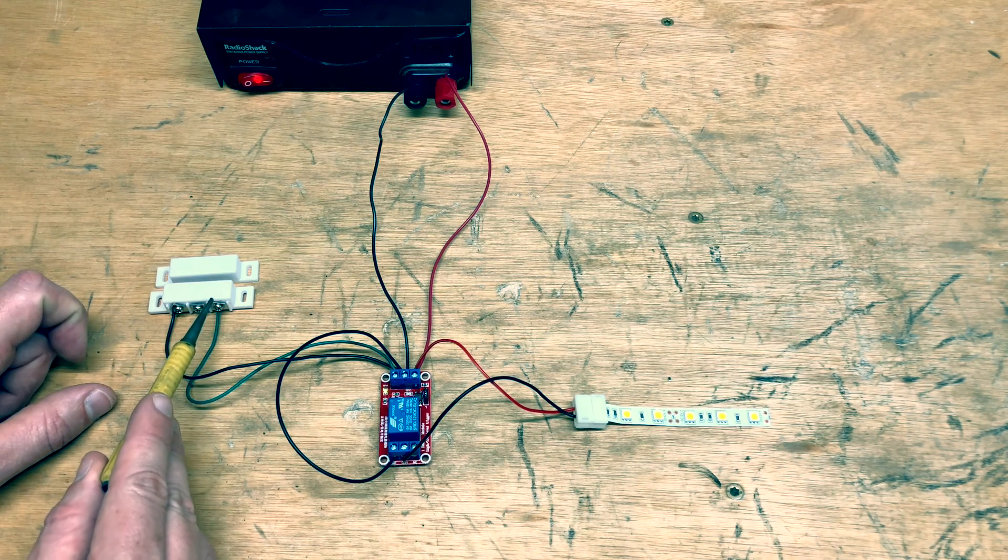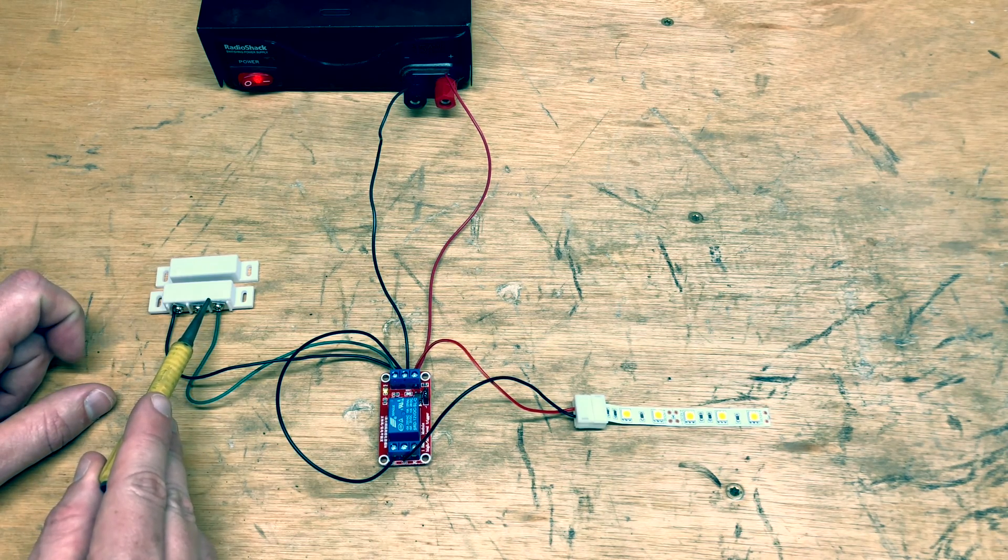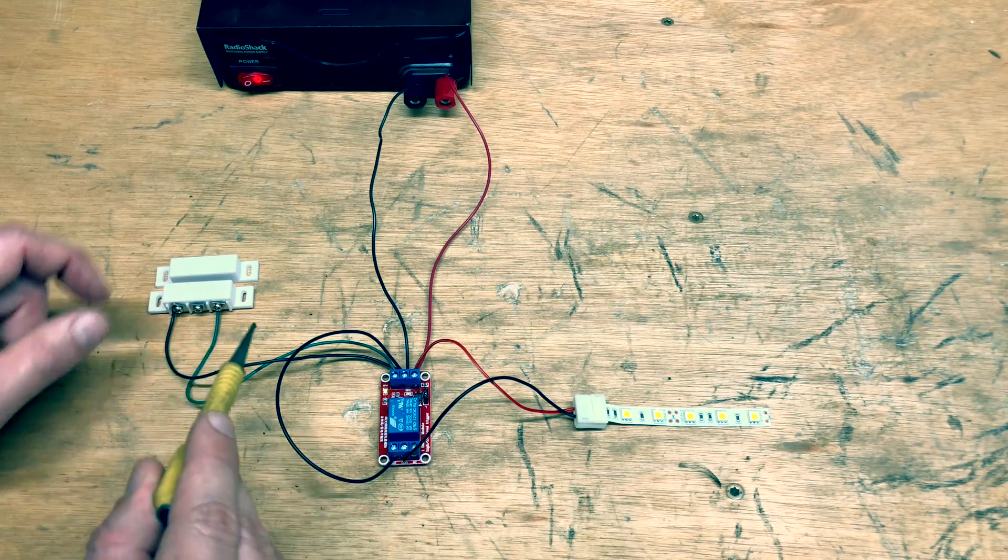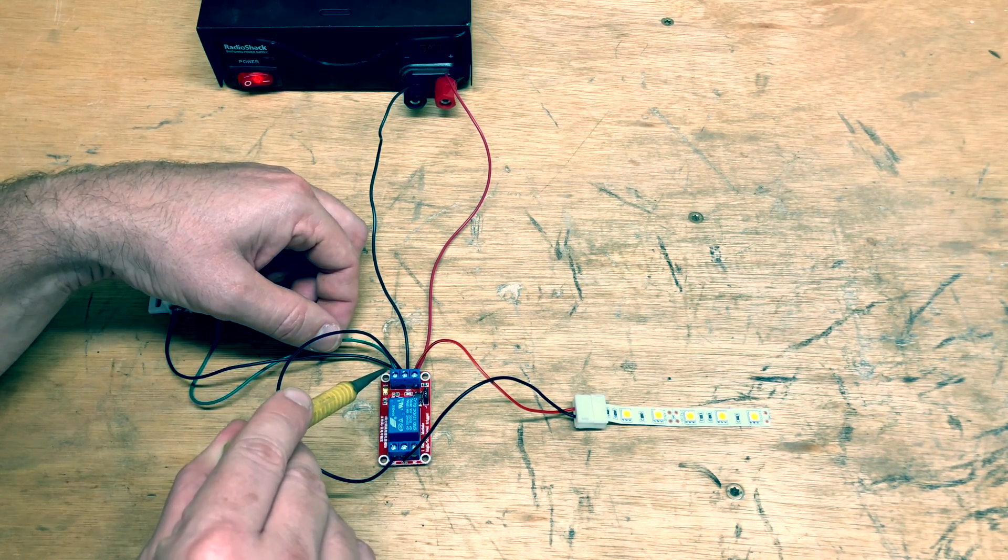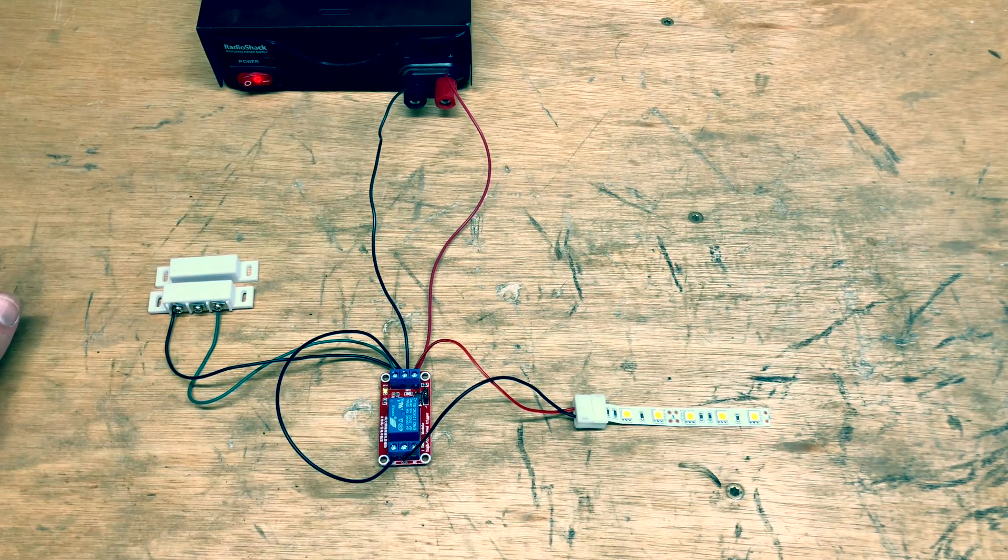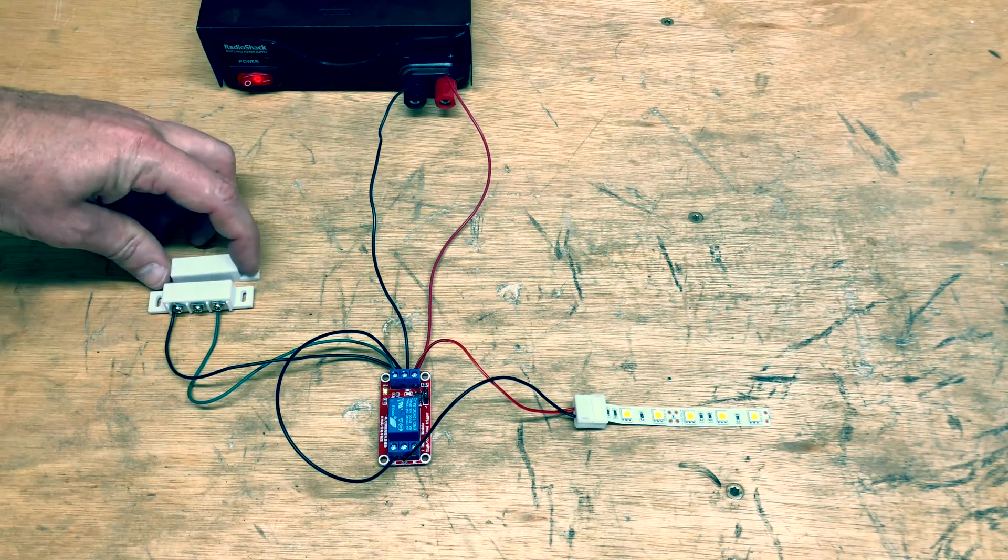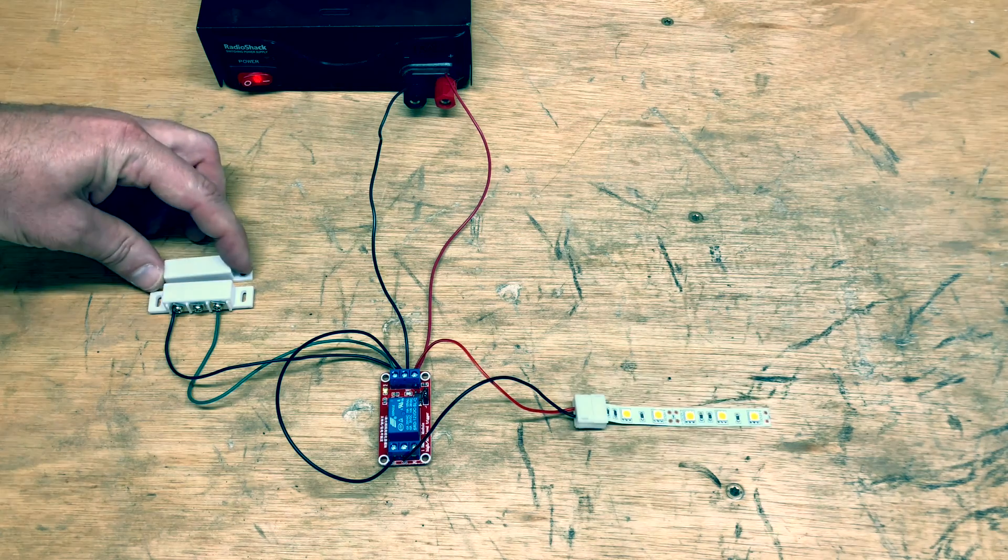And then the NO, the normally open on the reed switch, goes to the N or the signal on your relay. Off. I'm sorry. On. Off.